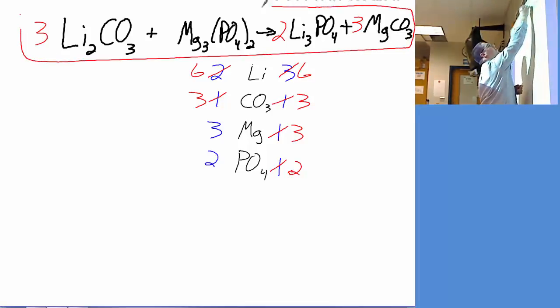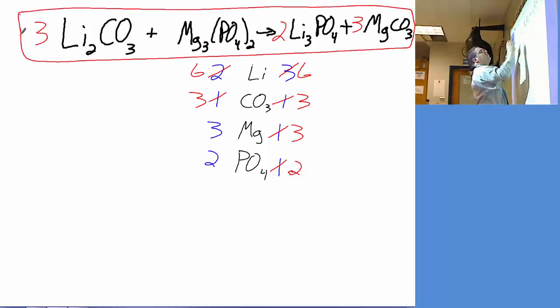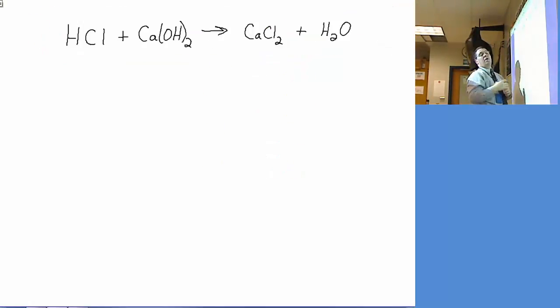So the tip here is, if you see polyatomic ions present in your compounds, check and see if they are in identical forms on both sides. If so, balance them as a single unit. All right, last example here - spotlight the last tip that was talked about.